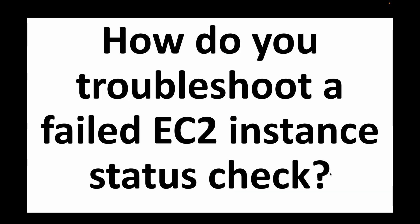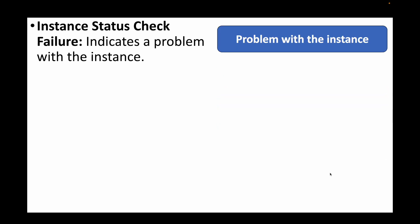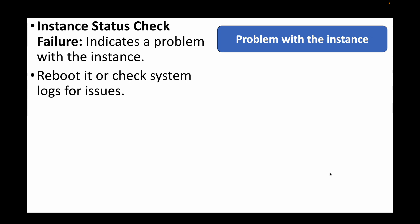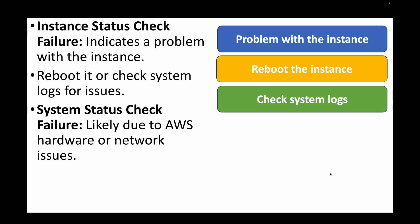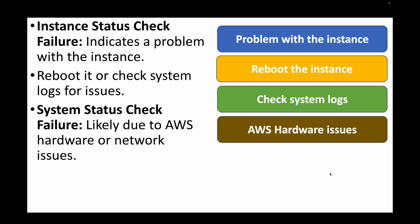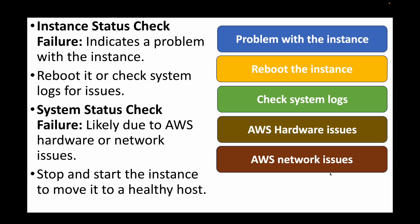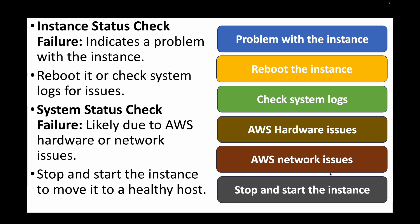The next question is: how do you troubleshoot a failed EC2 instance status check? EC2 instances have two checks. The instance status check failure indicates a problem with the instance itself — to fix this, try rebooting the EC2 instance or check the instance logs from the AWS console. The system status check failure is likely due to hardware or network issues on the AWS side. For this, stop and start the instance to move it to a healthy host, which will bring your instance back online.